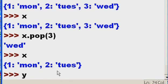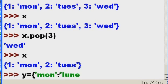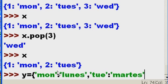I'm now going to make another one. y equals open curlies and it's going to be 'mon' colon 'lunas', comma, and 'tue' colon 'martes'. There we go.